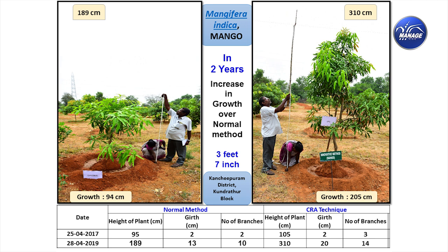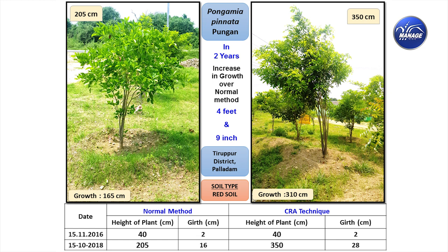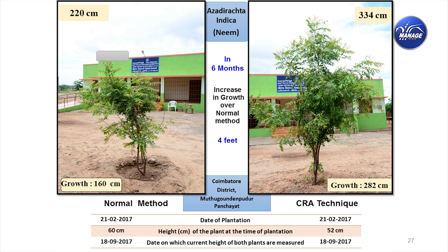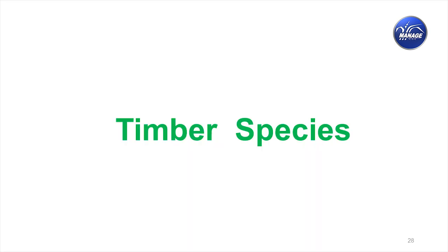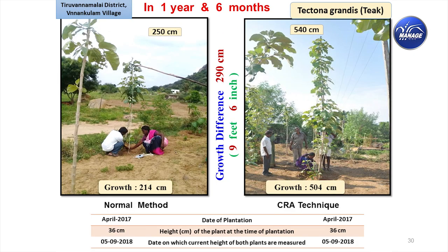For mango, the height difference in 2 years is 3 feet 7 inches. For jamun — now very popular for its medicinal properties in controlling diabetes — the difference in 2 years and 3 months is 7 feet 2 inches. Jack: 3 feet 9 inches in 2 years and 5 months. Guava: 4 feet 3 inches in 1 year. Sapota: 4 feet 7 inches in 2 years. For oil seed species — Pongamia: 4 feet 9 inches in 2 years. Neem: 4 feet in 6 months. Timber species show even more — Mahagani nearly 15 feet in 2 years 2 months; teak 9.5 feet in 1 year 6 months.